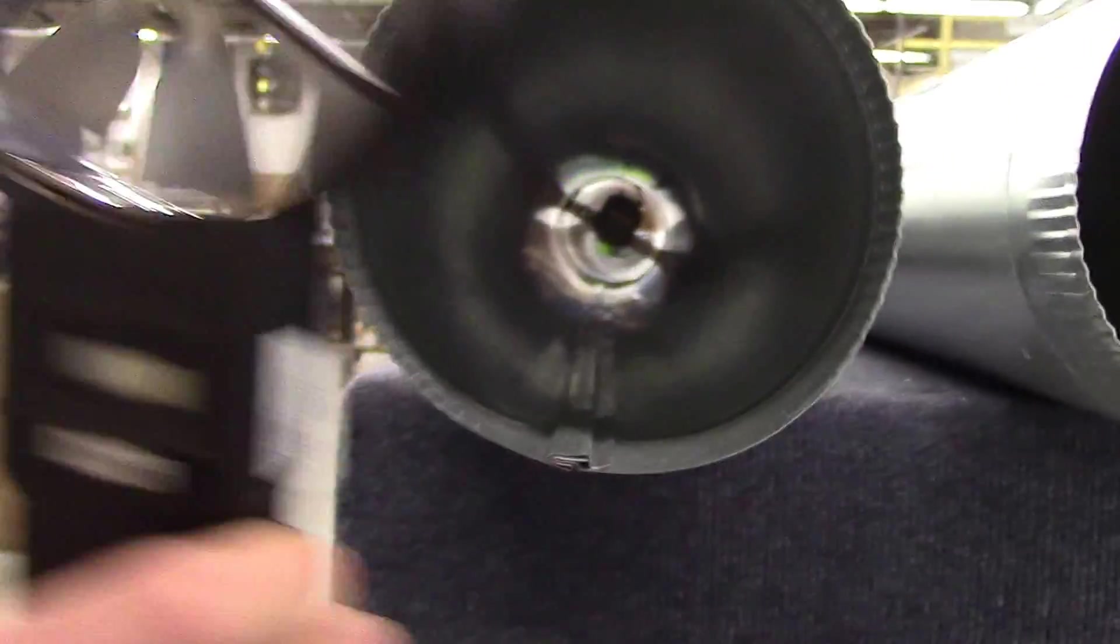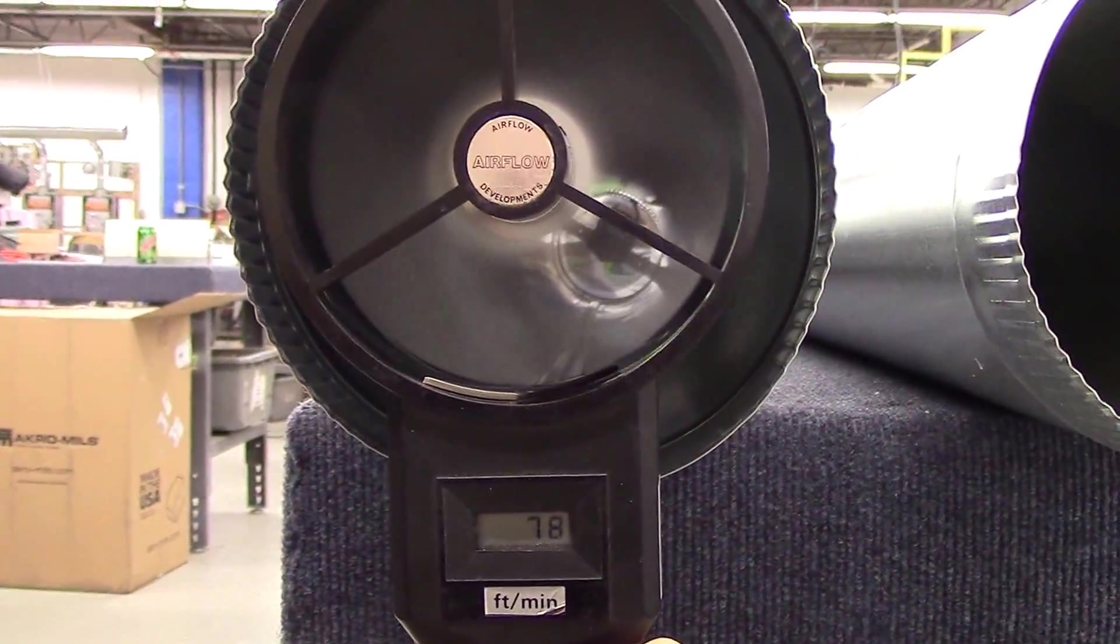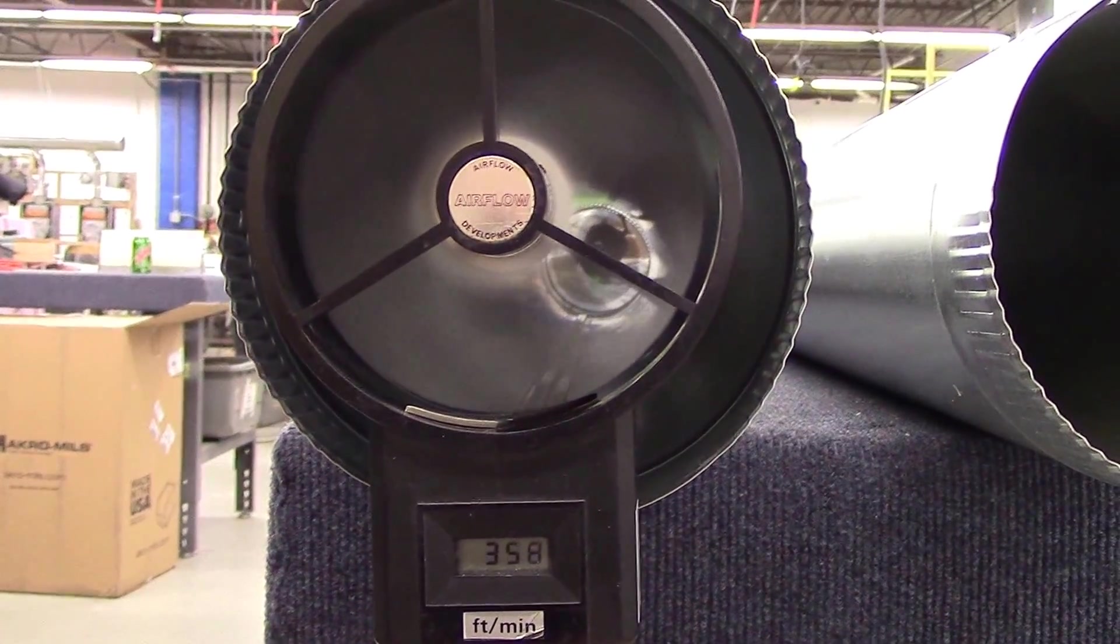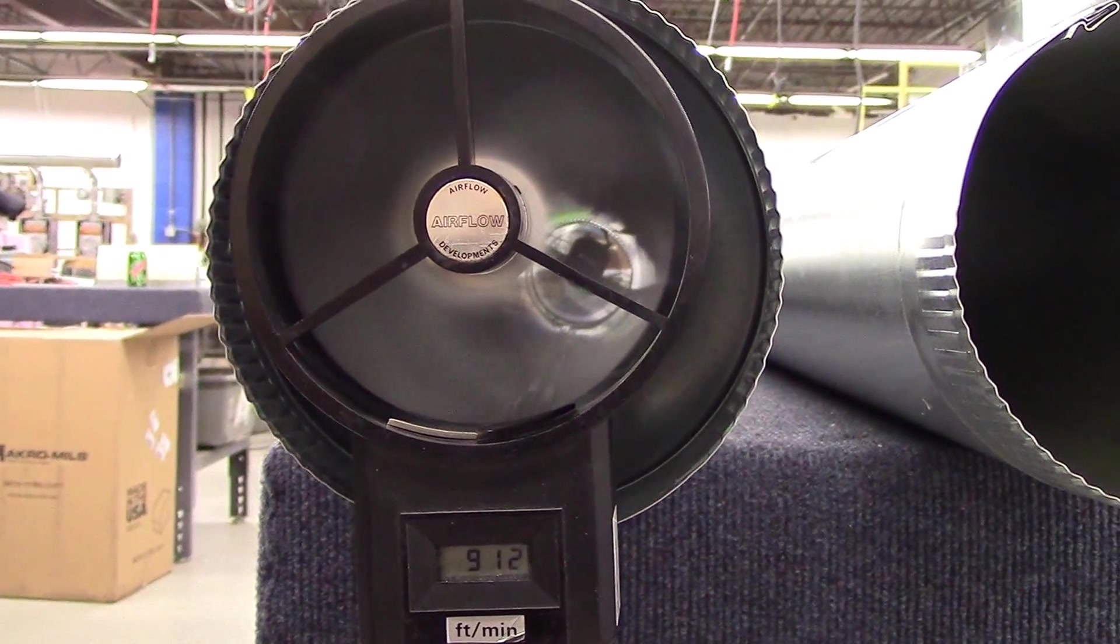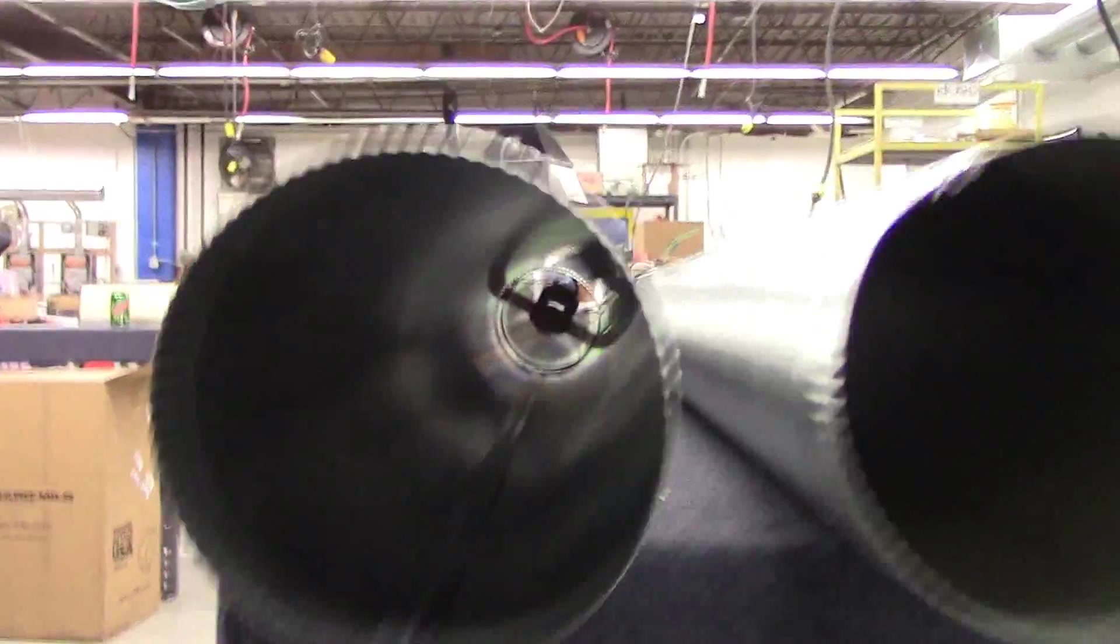And then when I bring it over to the Tjernlund EF-6, I'm going to wait for it to stabilize. We're already in above 500, 600. We're at 912. So we're at 113 and 912. So if you come over here, we do a quick calculation.